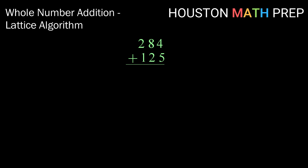Let's start on the right. Here we have 4 plus 5. Now 4 plus 5 is 9, so in order to write that as a two-digit number, I'm going to write that vertically as 0, 9. Moving to the next place, 8 plus 2 is 10. So writing that as a two-digit number, again vertically, I have 1, 0. And 2 plus 1 is 3, so again to write that as a two-digit number, I'm going to write that as 0, 3.